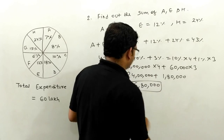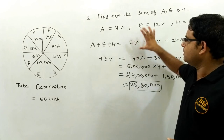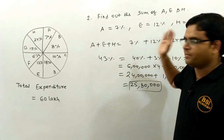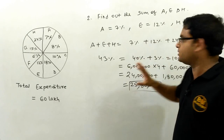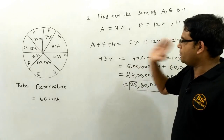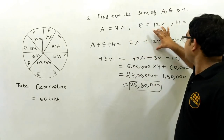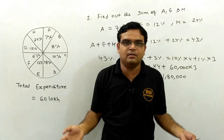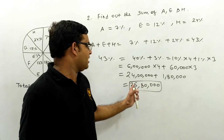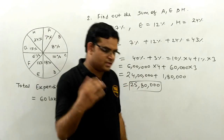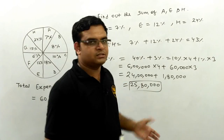This gives us 25 lakh 80,000, which is our answer. You can also do this by another method: substitute the values of 7%, 12%, and 24% individually and then add them. That answer will also equal 25 lakh 80,000. Please try by another method as well — you will find the same answer.